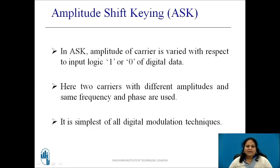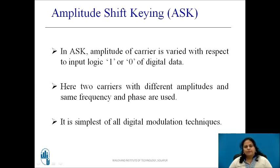Let us see ASK in detail. In ASK, the amplitude of the carrier is varied with respect to the input logic 1 or 0 of the modulating signal, and the frequency and phase of the carrier are kept constant. For this modulation technique, 2 carriers with different amplitudes but the same phase and frequency are used to represent 1 and 0. It is the simplest of all the digital modulation techniques.